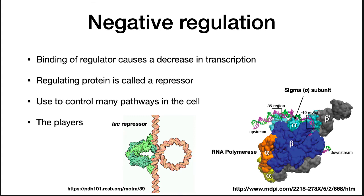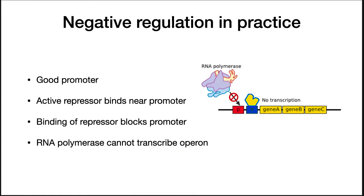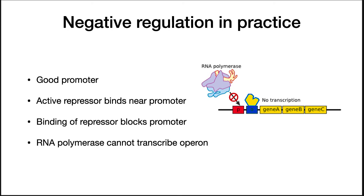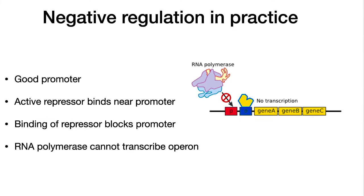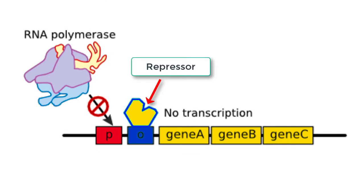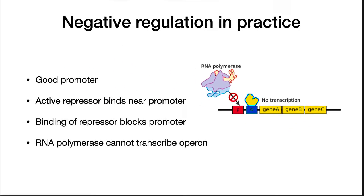The two players in the system are the repressor and RNA polymerase. The figure shows the lacI repressor binding to DNA. Note that it has two identical domains. A set of genes that are transcribed into a single messenger RNA is called an operon. In practice, genes under negative regulation will have a good promoter — something RNA polymerase will readily bind to. The active repressor binds near the promoter and blocks RNA polymerase from accessing its promoter. Thus, RNA polymerase cannot transcribe the operon.